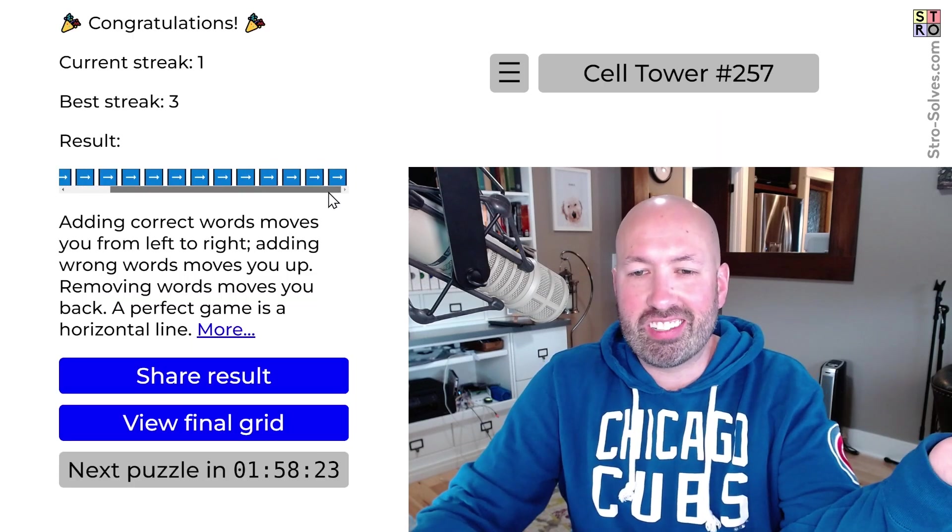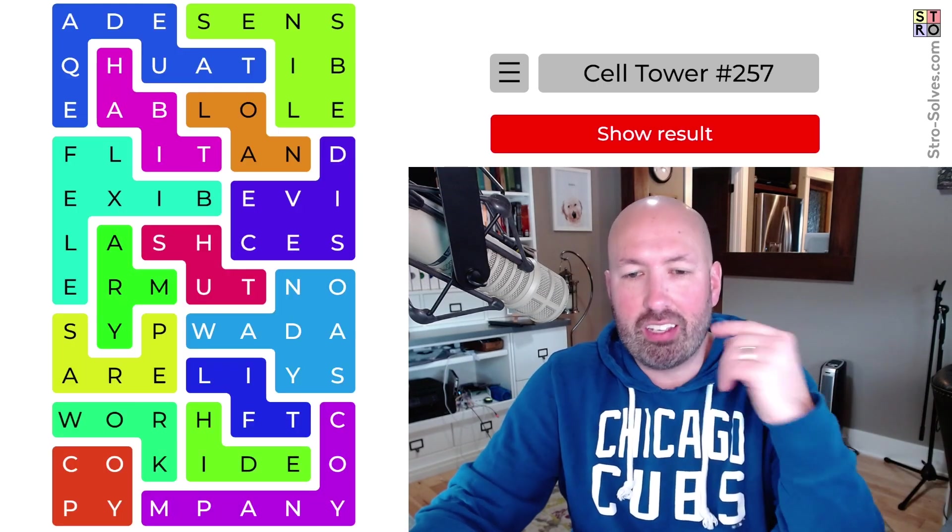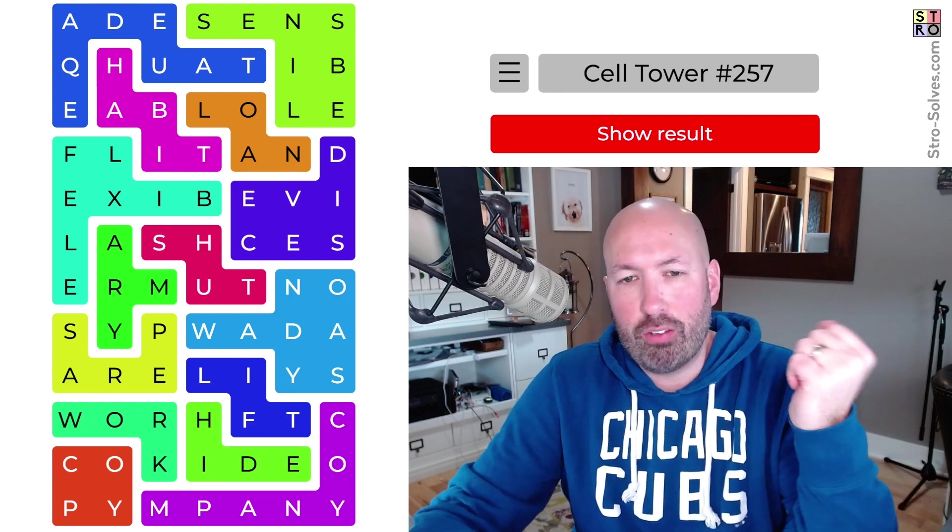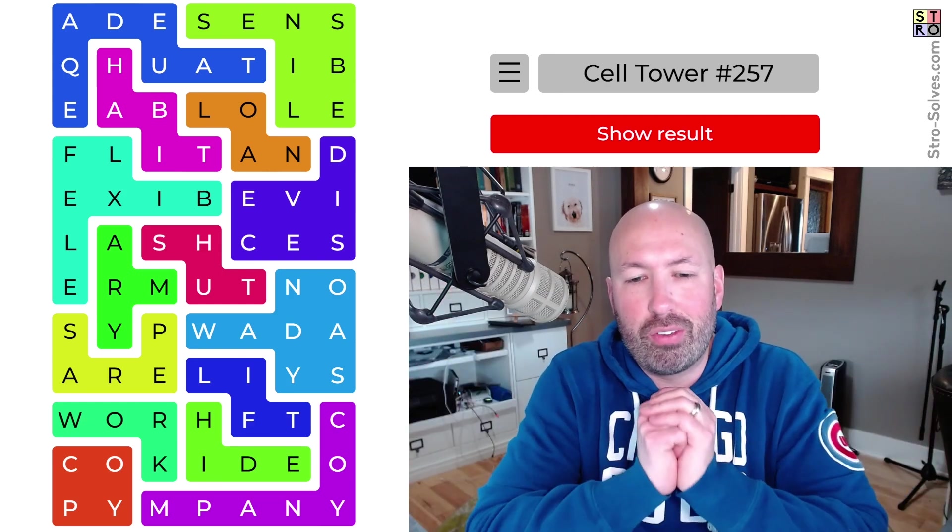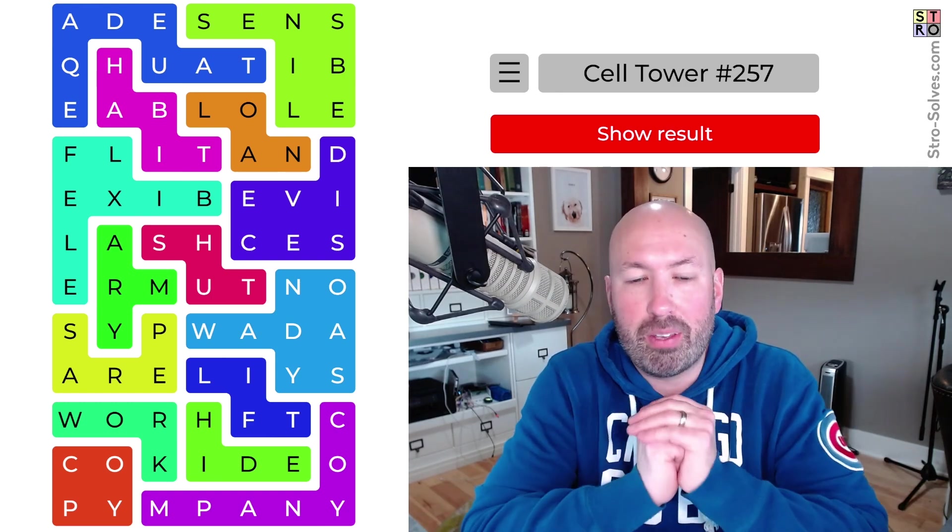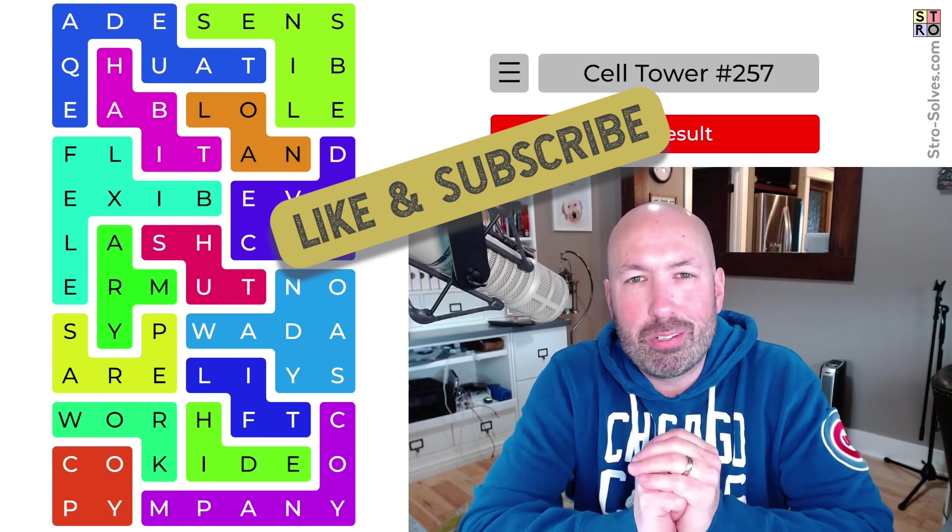And there we go. All right. Straight across the line. No mistakes. Very nice. So not too bad. There was a few tricky things in there. But nothing too difficult, I didn't think. But anyways, let me know how you did with Cell Tower 257. And which words tripped you up if you had any issues with it. And be sure to like and subscribe. And I'll see you again soon with some more puzzles.